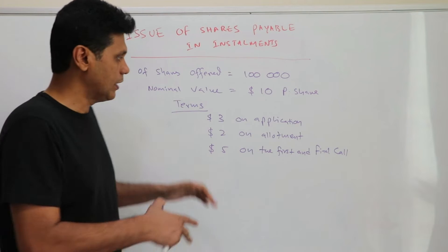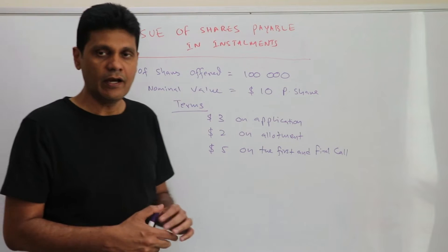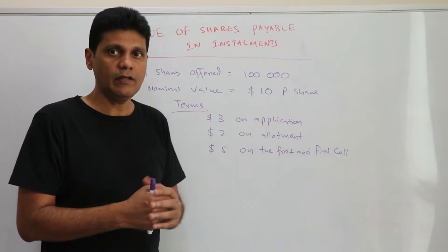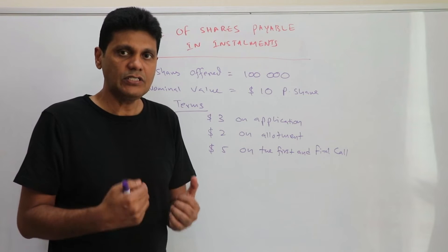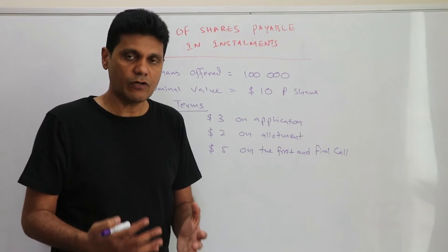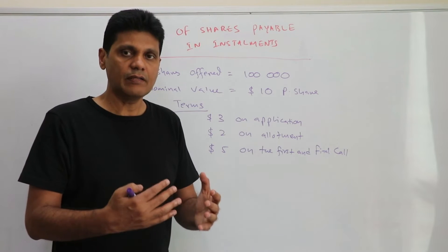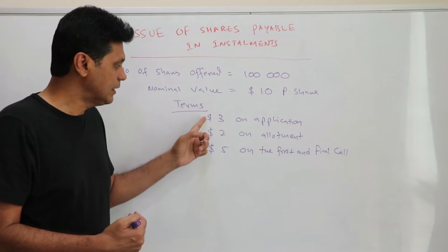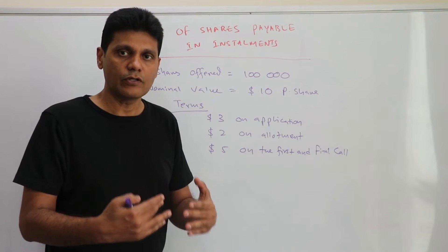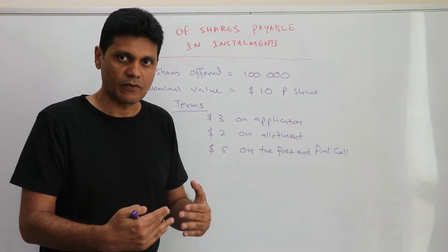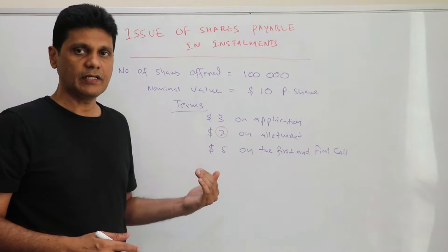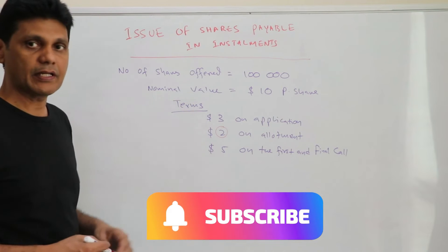In a situation like this, rather than collecting the full $10 at once, cash is collected by the company in installments. As and when the money is received at each stage, the company will have to record that particular transaction. Let's now move on to the double entries to record this.